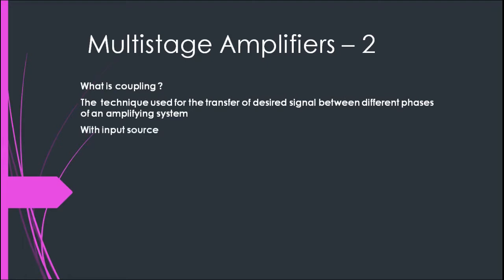For example, imagine a single-stage amplifier, a normal transistor amplifier. For the amplifier to amplify a signal, it needs to receive a signal from an input source. We are using capacitors, sometimes inductors, sometimes resistors, or sometimes a combination of inductors, capacitors, or resistors at the input side, so that a desired signal is fed into the input side of the amplifier. This technique or the electronic circuit used at the input side is called the input coupling system.